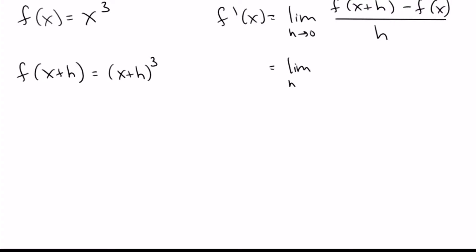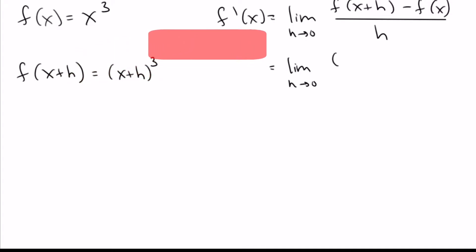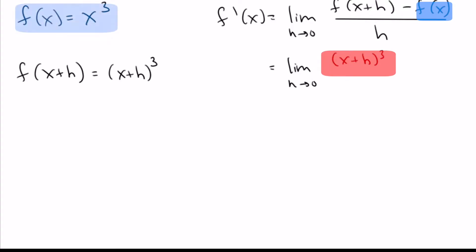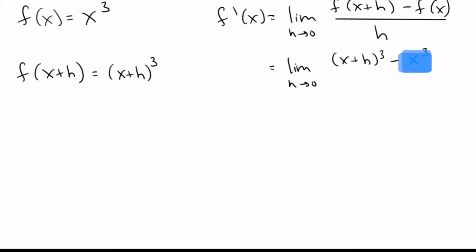We can go ahead and fill in the first part: this is (x plus h) cubed. For the next part, f of x is just written right there — f of x equals x cubed — so I can just plug that part in. On the bottom, we just have h.